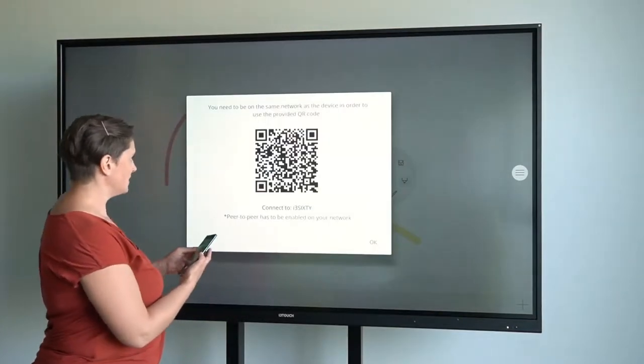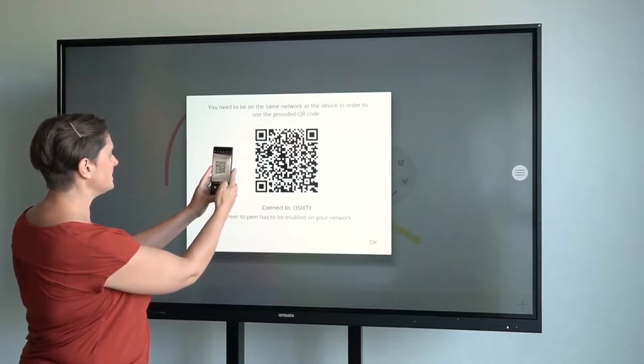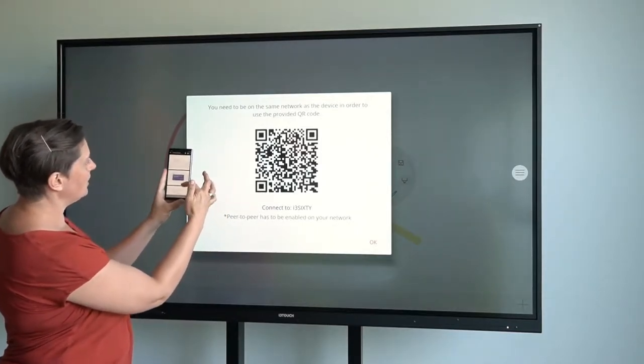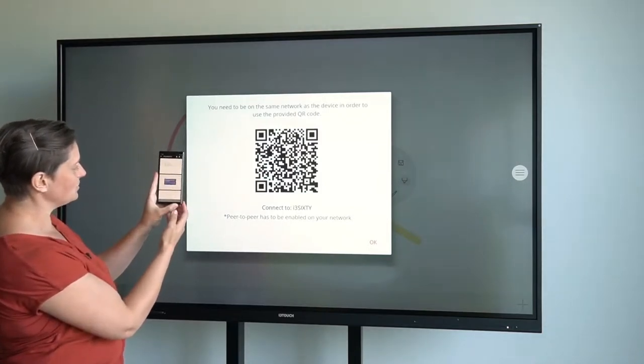So what happens is, there's gonna be a QR code. Scan it with your device. And as you can see, you now have the PDF document with all the pages right onto your phone.